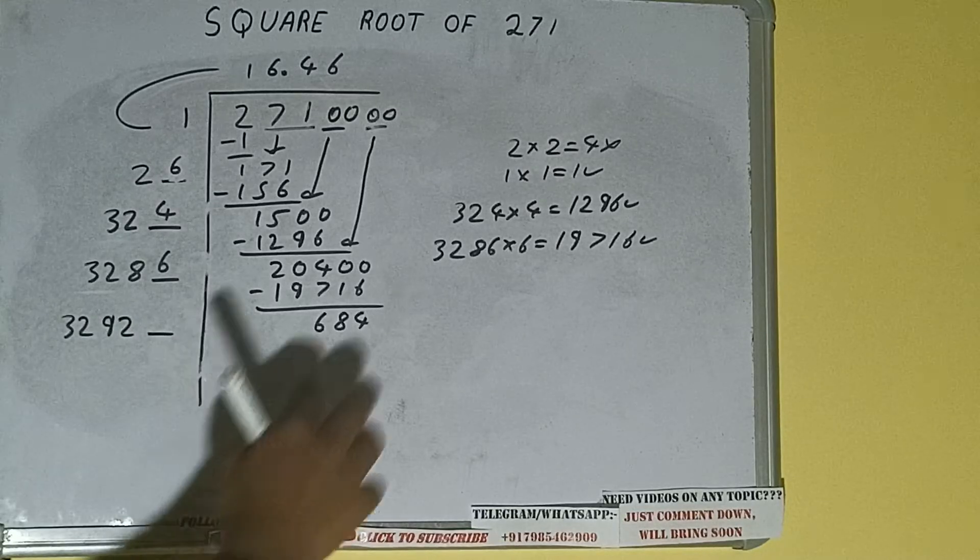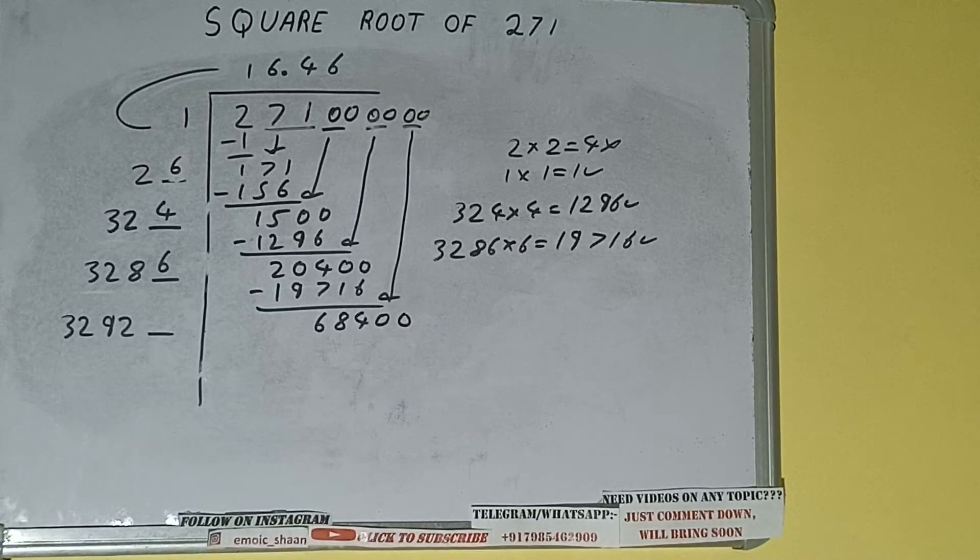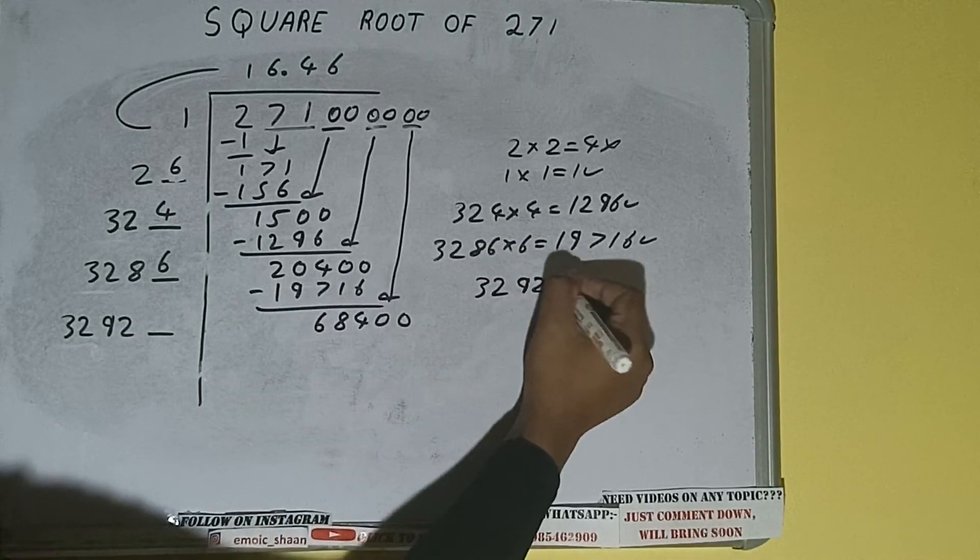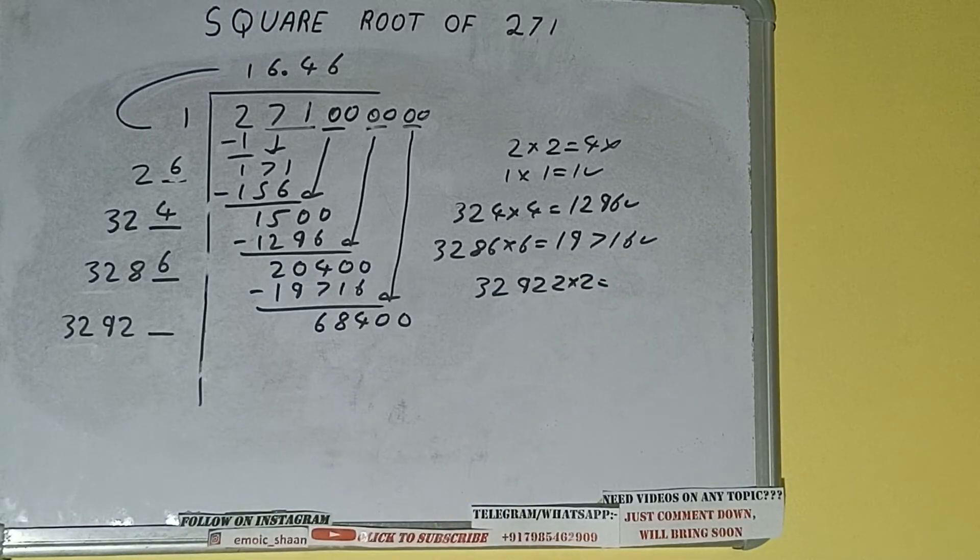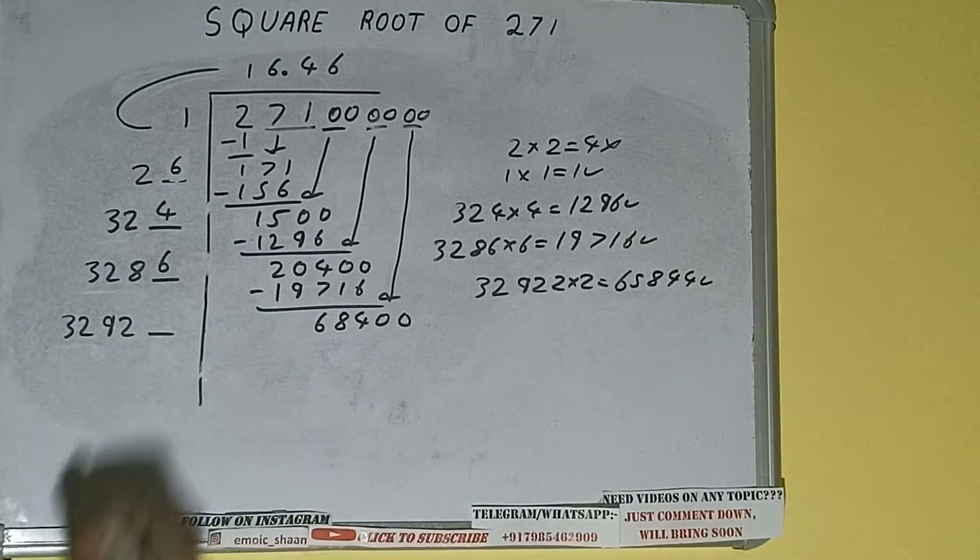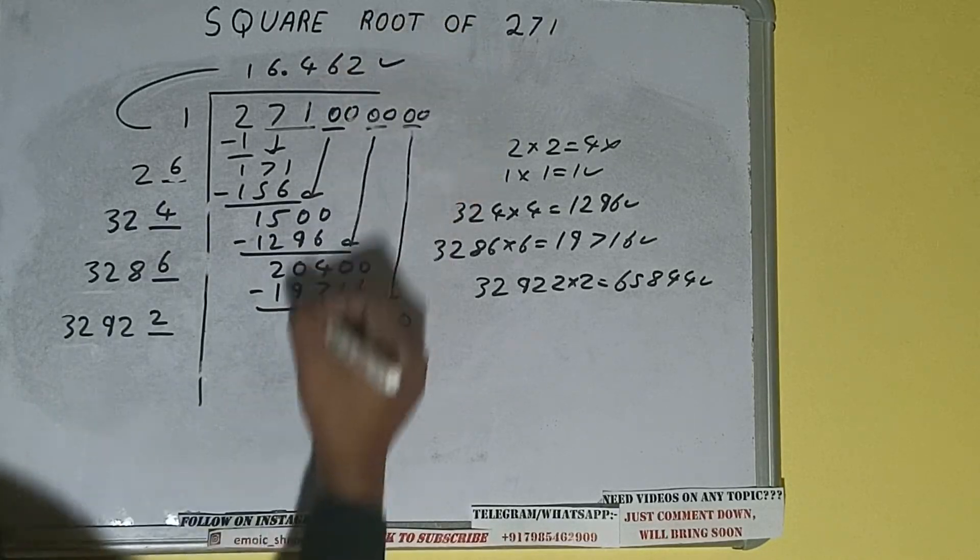One digit extra, and this number we need to make it big, so bring the next pair of zeros down and it will be 68400. Now compare this 32 with this 68. So 32 two times is 64, so we can try it two times. 32922 into 2 we can try, and we'll be having 65844, which is good to take. So two here and two here, but we don't need to calculate because we got the answer correct up to three decimal places.